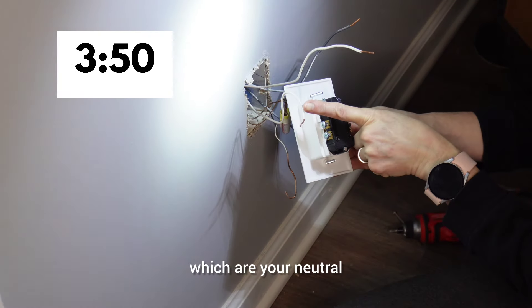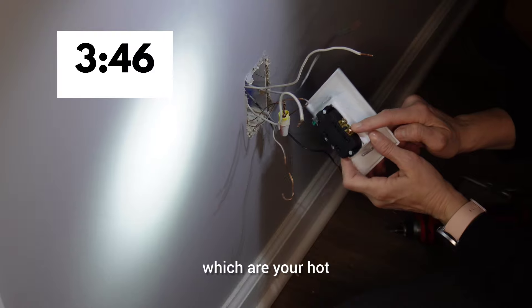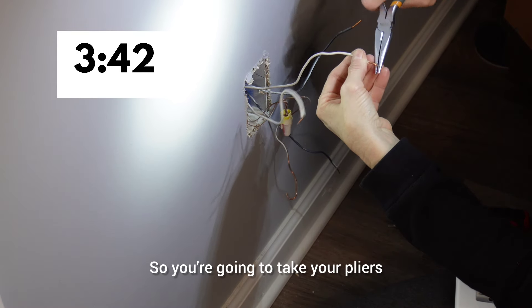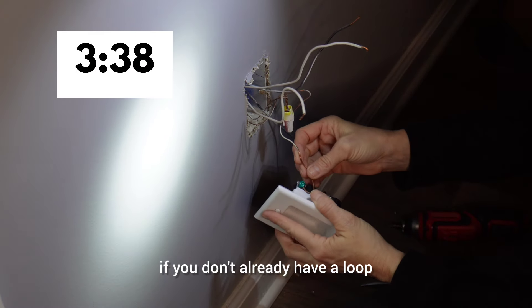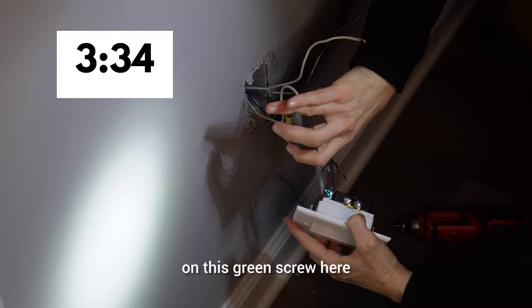The white wires, which are your neutral, are going to go on the silver screws here. And the black wires, which are your hot, will connect to the brass screws. So you're going to take your pliers. We're going to make a little loop in the wire if you don't already have a loop. And first, we're going to put the ground wire, which is the copper wire, on this green screw here.